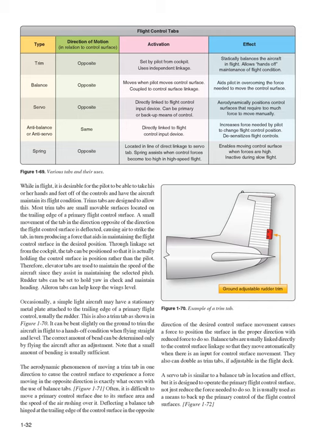Occasionally, a simple light aircraft may have a stationary metal plate attached to the trailing edge of a primary flight control, usually the rudder — also a trim tab. It can be bent slightly on the ground to trim the aircraft in flight to a hands-off condition when flying straight and level. The correct amount of bend can be determined only by flying the aircraft after an adjustment. The aerodynamic phenomenon of moving a trim tab in one direction to cause the control surface to experience a force moving in the opposite direction is exactly what occurs with the use of balance tabs. Often, it is difficult to move a primary control surface due to its surface area and the speed of the air rushing over it. Deflecting a balance tab hinged at the trailing edge of the control surface in the opposite direction of the desired control surface movement causes a force that aids in moving the surface in the proper direction with reduced effort. Balance tabs are usually linked directly to the control surface linkage so that they move automatically; they can also double as trim tabs if adjustable in the flight deck.